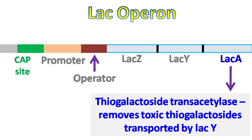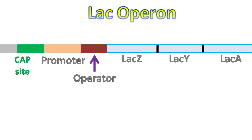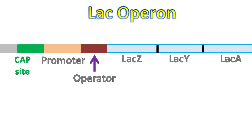The toxic thiogalactosides are also transported by lacY. The lacI gene encodes a repressor that binds the operator and represses the lac operon.